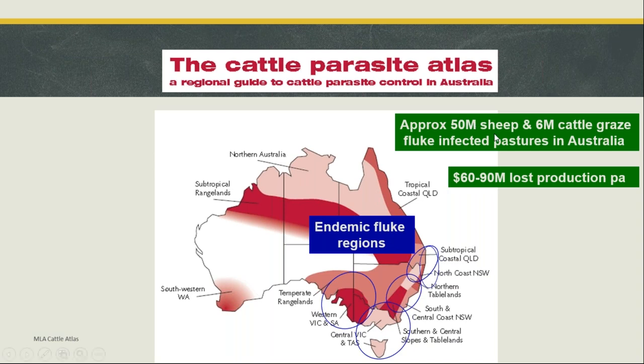At last check around 2005, about 50 million sheep and 6 million cattle graze these infected pasture areas, with between 60 and 90 million dollars in production losses per annum — and that's a 15-year-old figure now, so it's probably well over that. Liver fluke is one of the parasites we really need to get on top of, though as we'll discuss, there have been a few issues in controlling it.